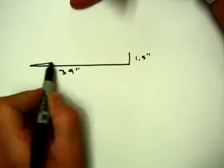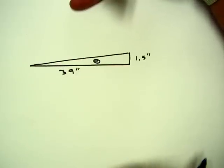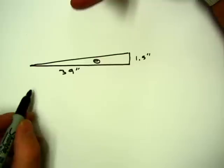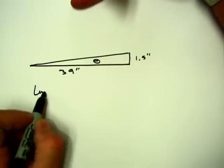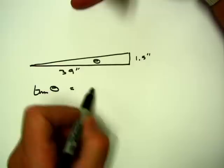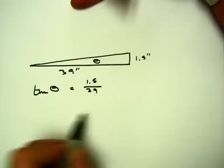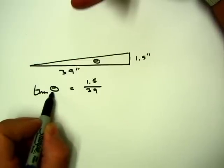Now what I need to do is I need to calculate the angle of this washout and we're going to call it theta, the angle. If you remember from your geometry classes, the tangent of an angle theta is equivalent to the opposite over the adjacent. So in this case it's 1.5 divided by 39.